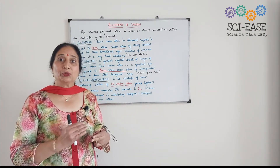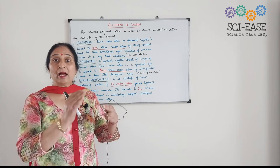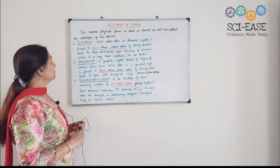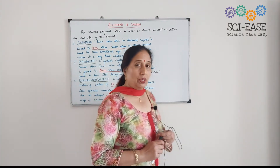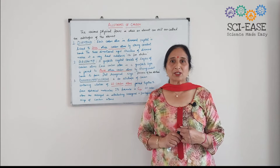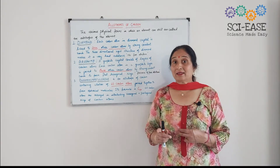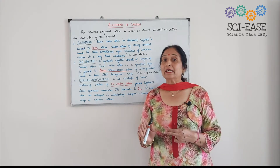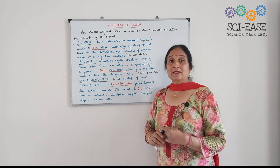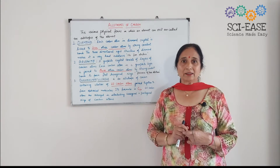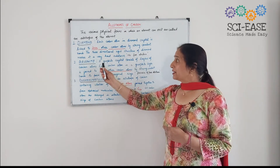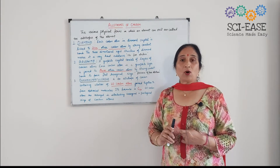I will tell you how diamond and graphite have different physical properties but same chemical properties. You know that diamond — during metals and non-metals I told you that diamond is the hardest substance known and it cannot conduct electricity. But graphite is usually grayish in color, while diamond is transparent with a shiny appearance, and graphite is a good conductor of electricity.